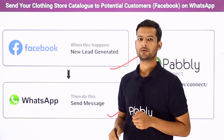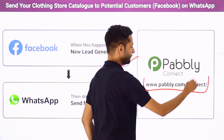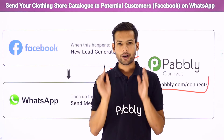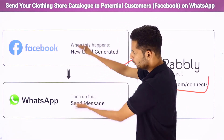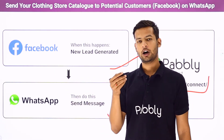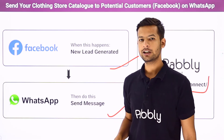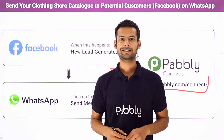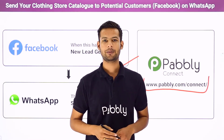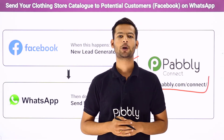However, there is no direct integration between these two applications. I have performed the automation with the help of Pabbly Connect. Pabbly Connect is an integration and automation software that links both applications together, so whenever a new lead is generated from your advertisement and they successfully submit the form, they automatically receive a WhatsApp message with the catalog link. Amazing, right? A non-technical person can also use this software very easily.